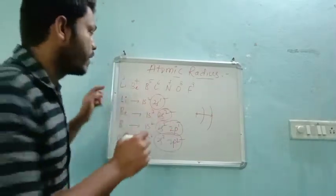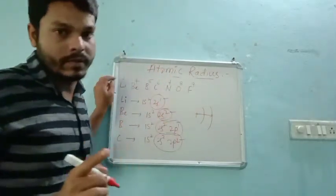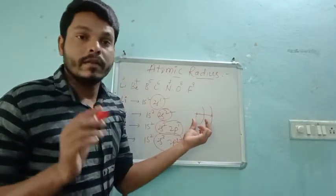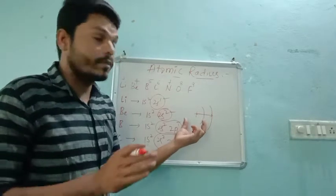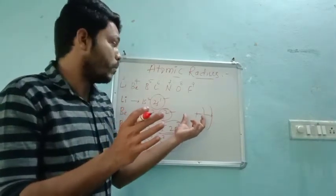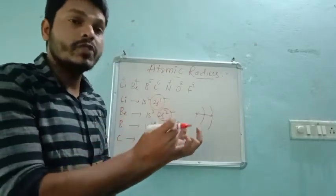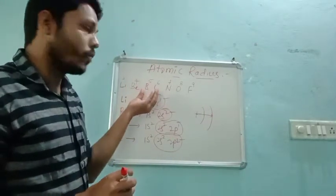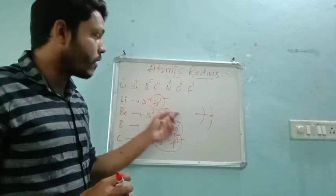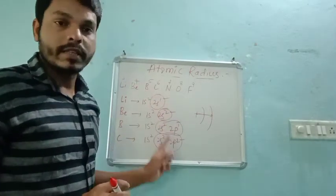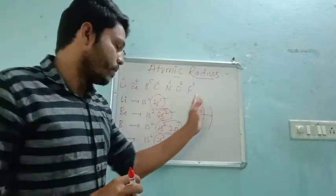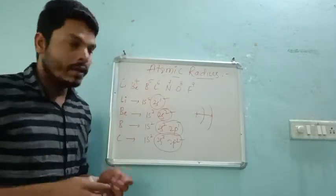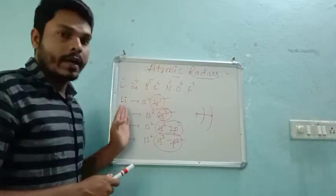Because of this electron density, the shell shrinks gradually towards the nucleus — atom by atom, as we move across the period, the shell size decreases. This is the reason how the atomic radius decreases in the period. So the conclusion: in a group, if we move from top to bottom, the atomic radius increases. In a period, moving from left to right, the atomic radius decreases, because the electrons are entering into the same shell.